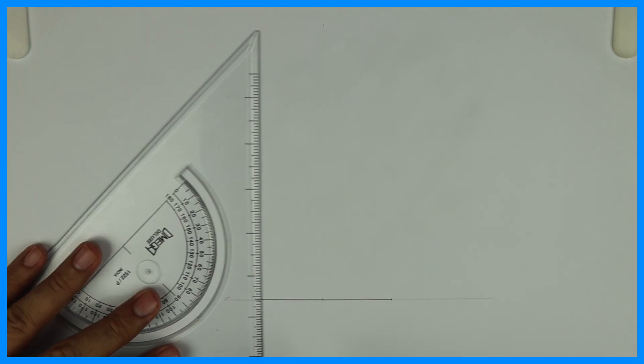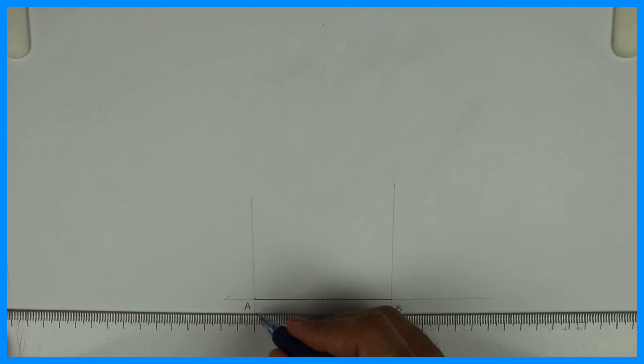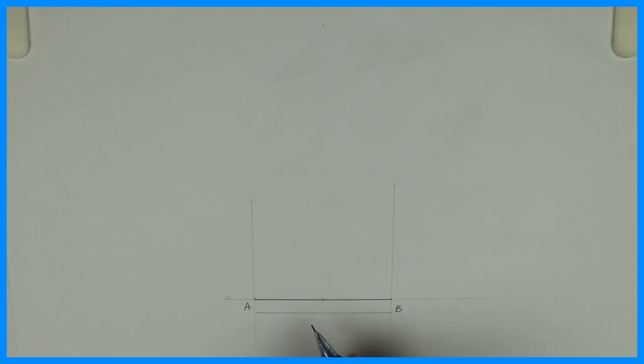First we will take a side 80mm. This is side AB which is 80mm.